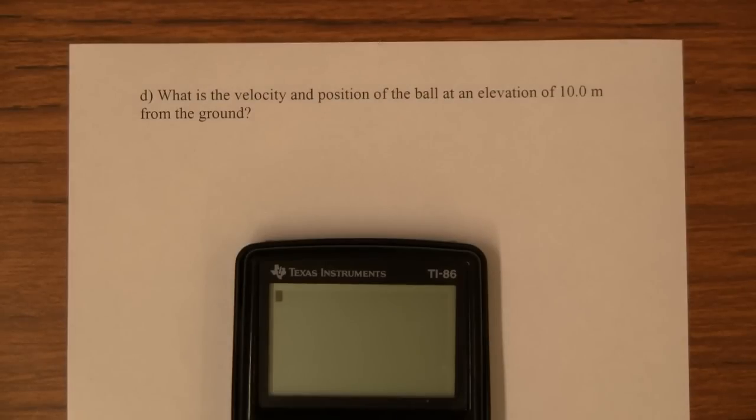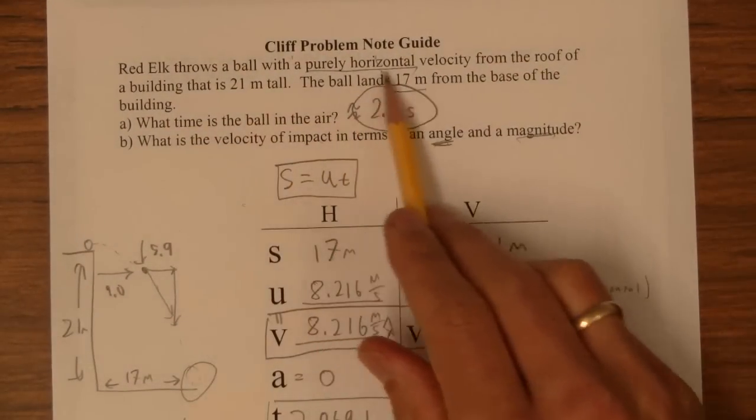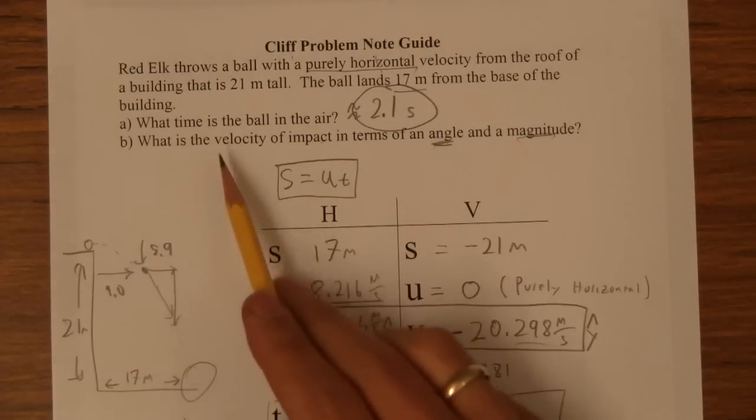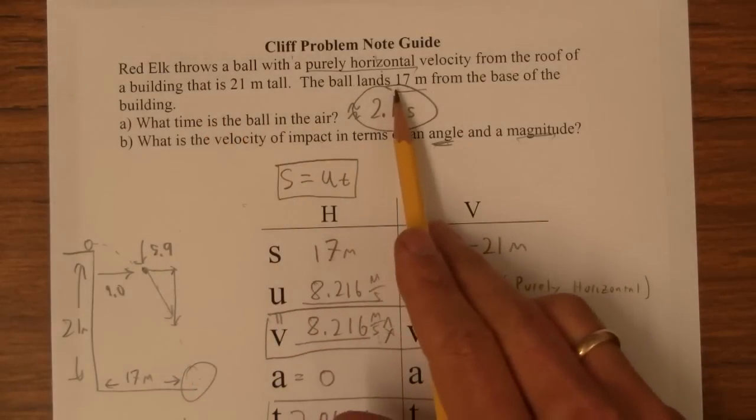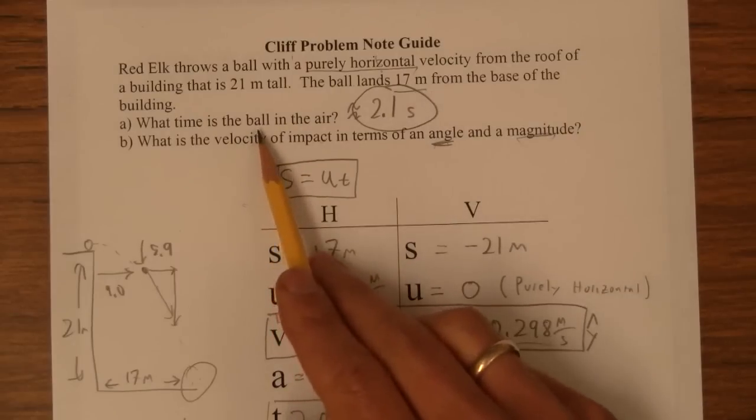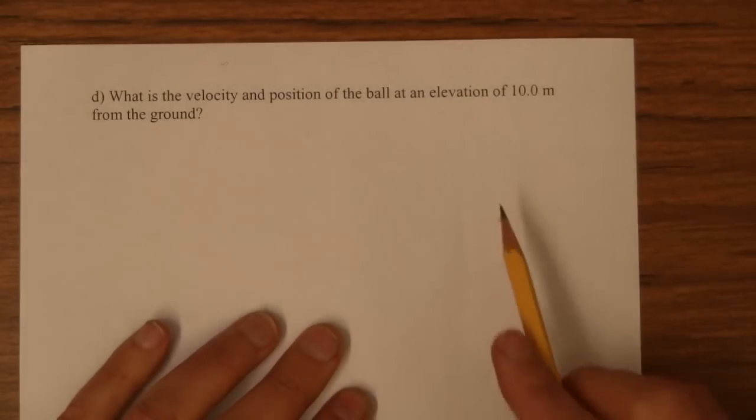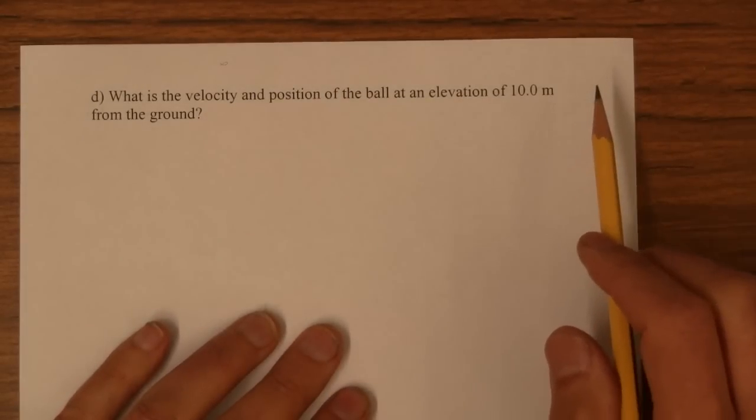In this video I'm going to show you how to do part D of this problem. So here's the original problem. Red elk throws a ball with a horizontal velocity from the roof of a building. It's 21 meters tall. The ball lands 17 meters from the base of the building. We already solved those and now we're being asked this advanced question which is what is the velocity and position of the ball when it's 10 meters above the ground?